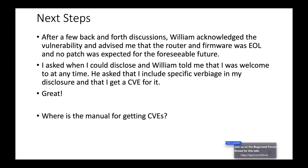He basically acknowledged it was a vulnerability and advised me that the stuff was end of life and no patch was available. I said that's fine, I just wanted them to know. He said I could disclose whenever I wanted to. Great — now where do I go to get a CVE? Google is not very helpful with this, because when you look at CVEs you've got CVE Naming Authorities (CNAs), and a lot of vendors are their own CNAs — like Apple for example.